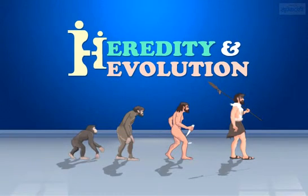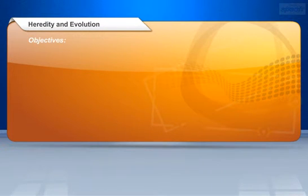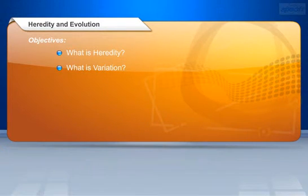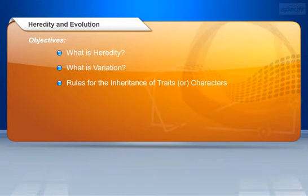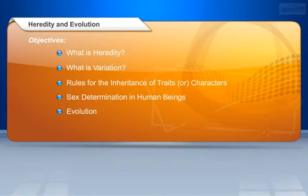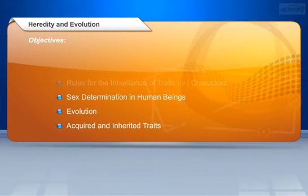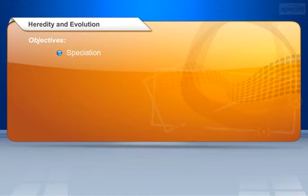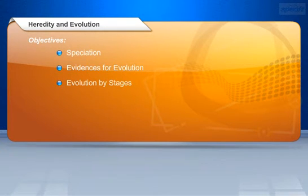Heredity and Evolution. At the end of this lesson, you will be able to understand: What is Heredity? What is Variation? Rules for the inheritance of traits or characters. Sex Determination in Human Beings. What is Evolution? What are acquired and inherited traits? What is Speciation? Evidences for Evolution, Evolution by Stages, and finally about Human Evolution.